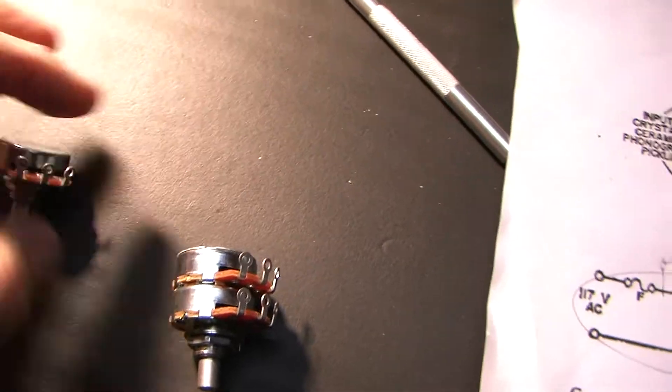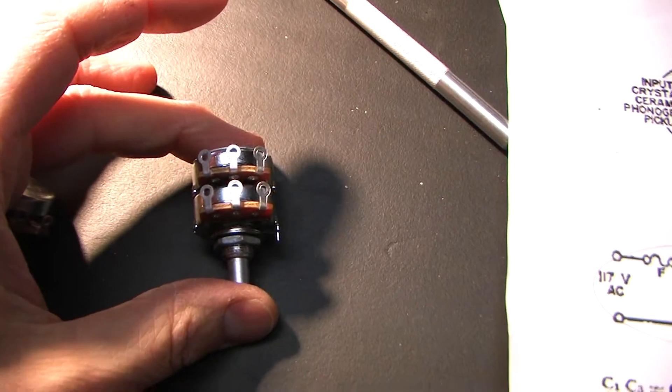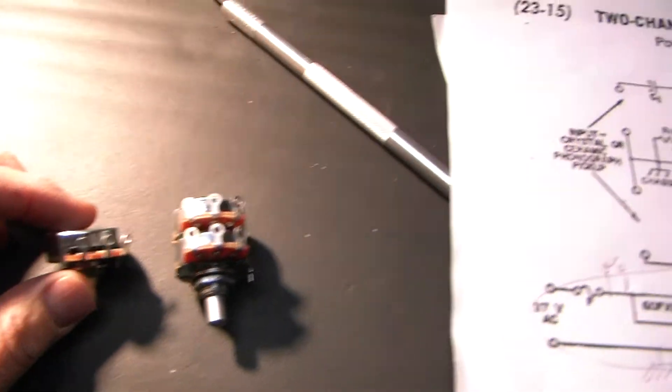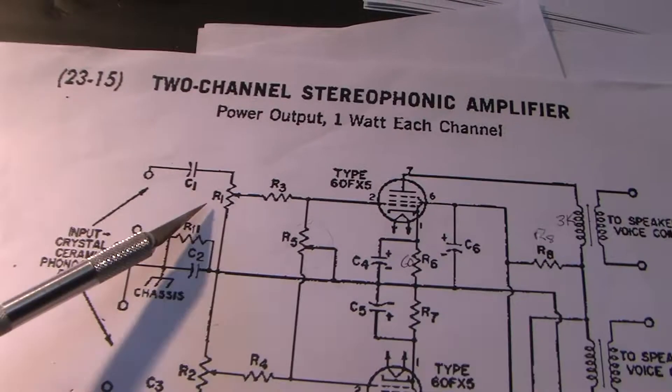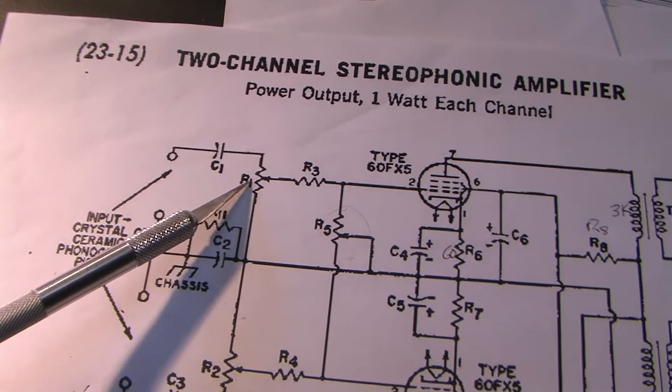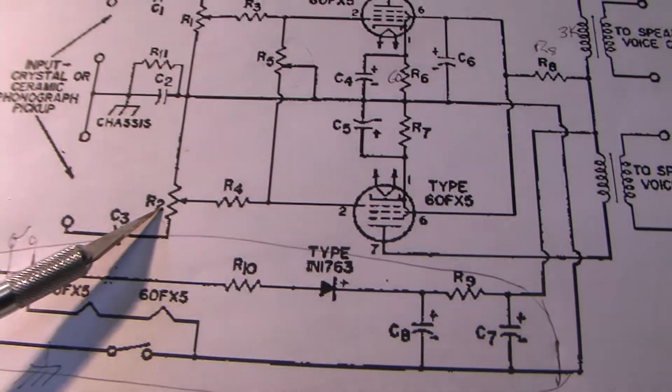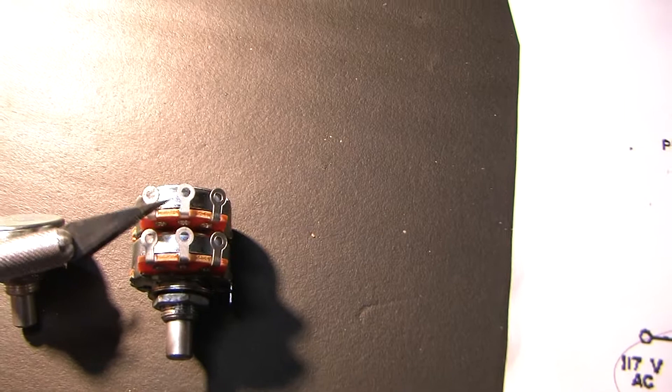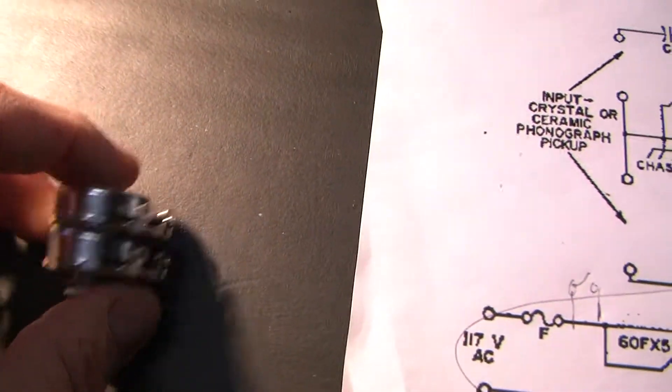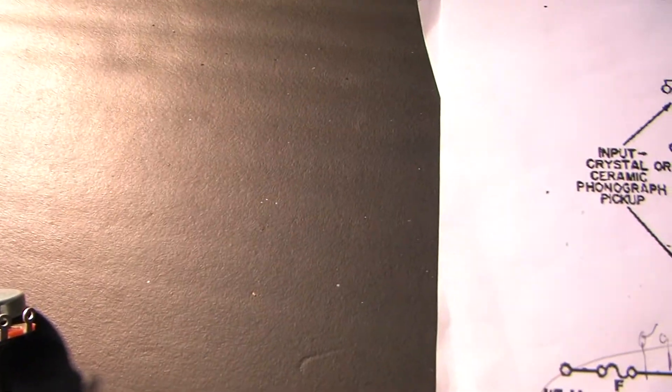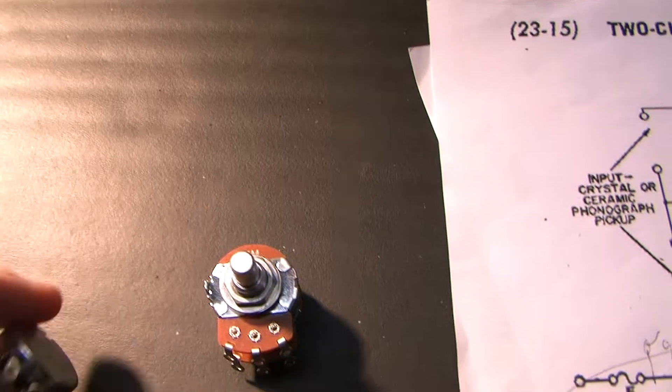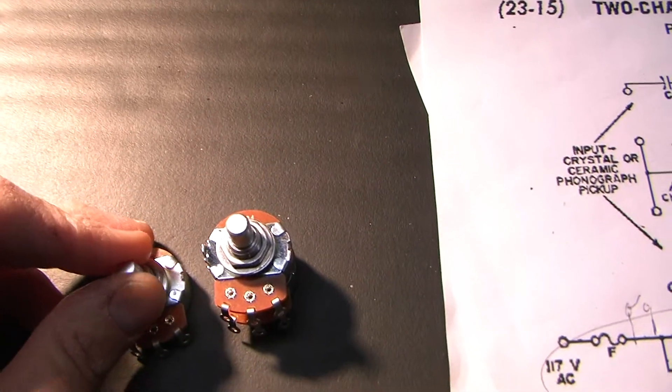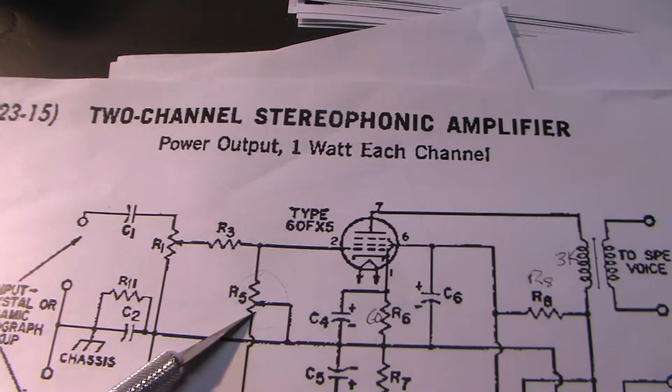Got my volume control potentiometer and balance control. The volume control potentiometer is right here, this is dual gang, so there's an R1 right here and R2 there, and that's what you see here. There's two potentiometers stacked on each other that track each other in resistance. This is also an audio taper rather than a linear, and this is a linear balance control potentiometer, which is this guy right here, R5.